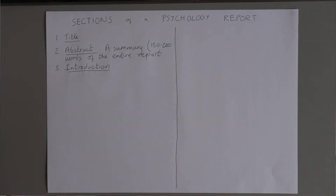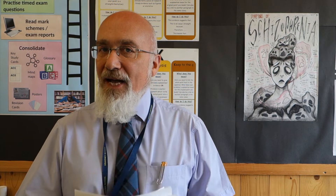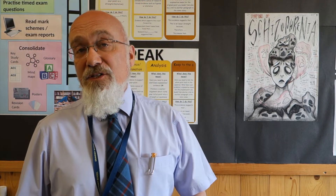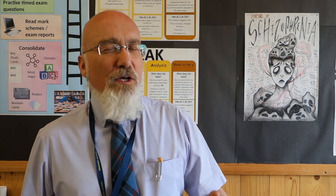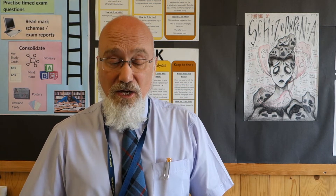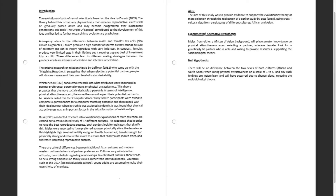The first substantial section in a psychological report is the introduction. The introduction is a review of the background studies which have already been done in a particular area — it is a short essay going over existing studies by psychologists who have investigated this area. In this report, they're investigating the evolutionary origin of sexual selection and have reviewed work by Wowster et al. 1966 and Buss 1989.